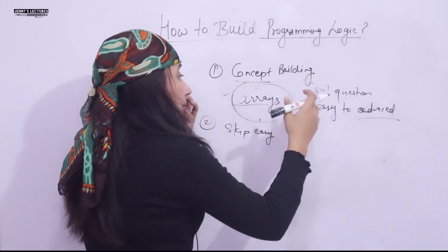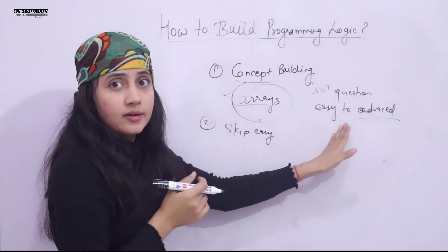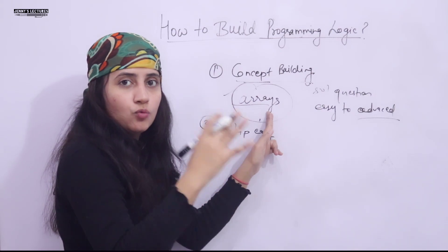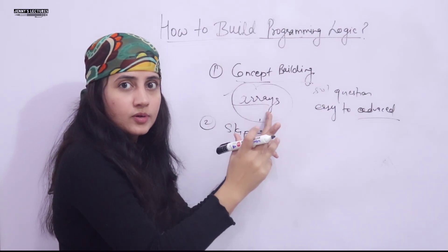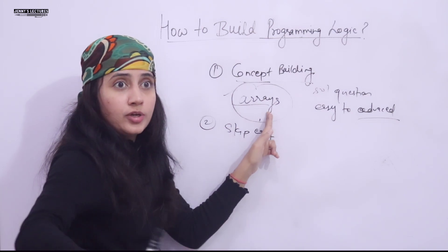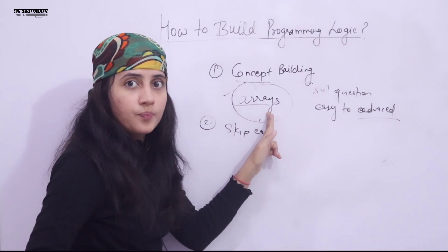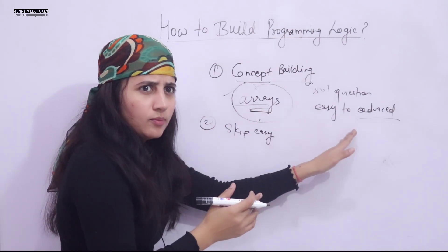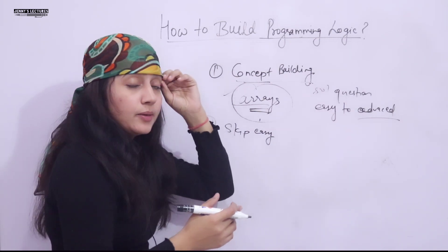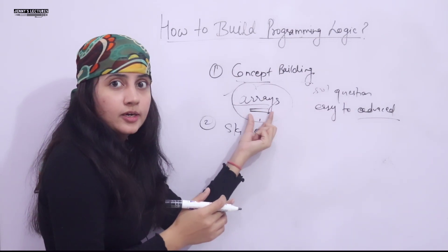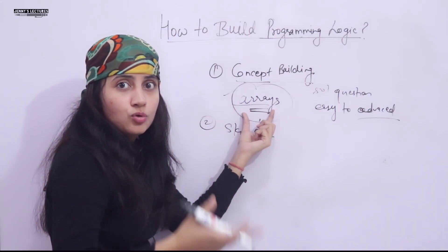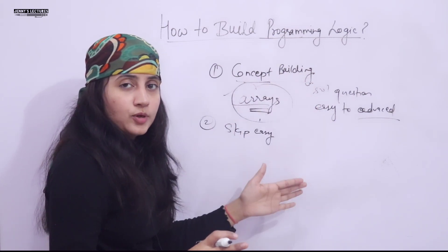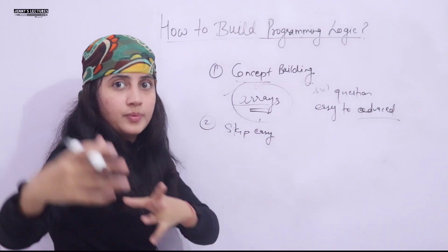Pick any problem, and if you are not getting the solution, go back to the concept — read it or watch YouTube tutorials. This should be active learning. It's not like you read all the concepts — array, string, linked list — and then at the end solve questions. No. Read about 50 to 60% of the concept, then try to solve easy problems. If you face difficulty with medium or advanced problems, go back to the concept again, read from a book or tutorial, then try to solve. This should go in parallel, topic by topic: finish one topic like arrays, then move to strings.